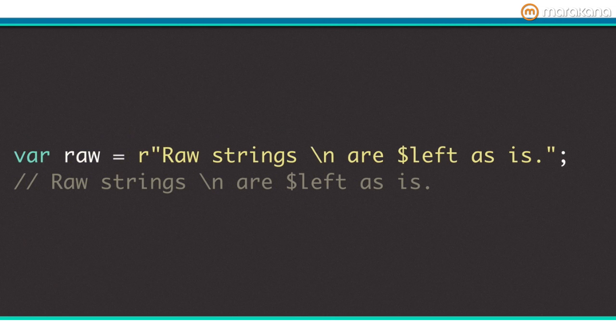For the times that you need to use special characters like dollar sign or backslash inside your string, you can use raw strings. Prefix a string with the character R to turn off any interpretation of the string's contents. This is very handy for building regular expressions.